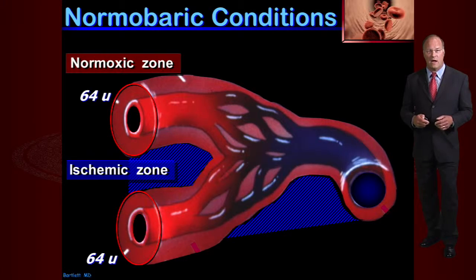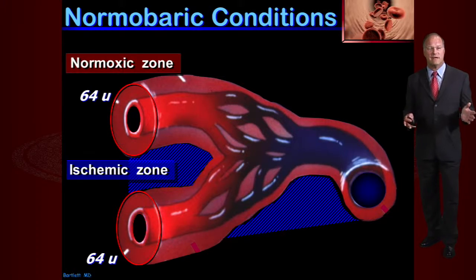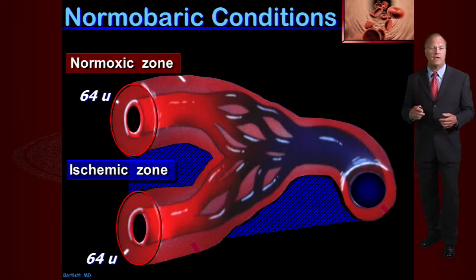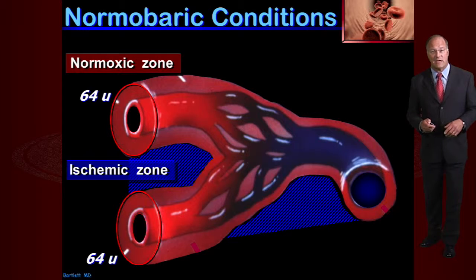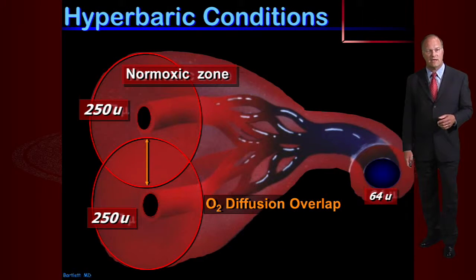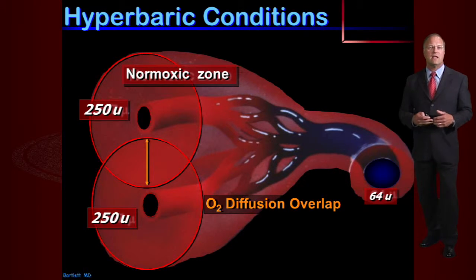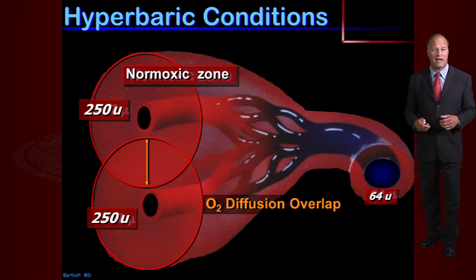At a cellular level, under normal baric conditions at the end arterioles there is an area we call ischemia — where oxygen is unable to diffuse to. These ischemic zones can become quite large in compromised tissues, especially with infection, trauma, or peripheral arterial disease as seen in diabetic patients. Patients can lose tissue, it can become gangrenous, and they can go on to amputation. However, under hyperbaric conditions, there is overlap of those ischemic zones due to the large increase in dissolved oxygen.